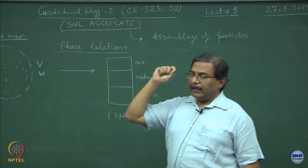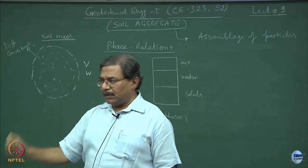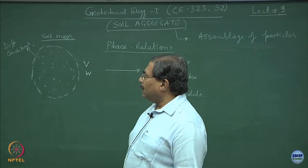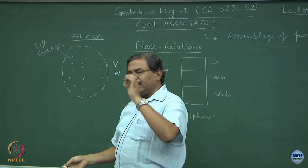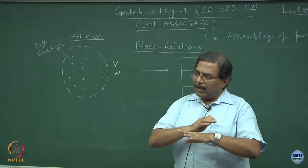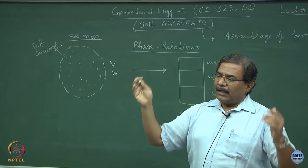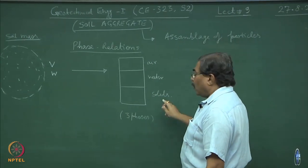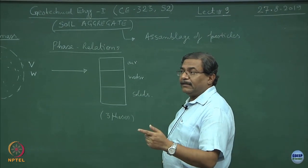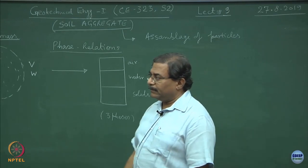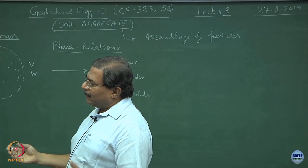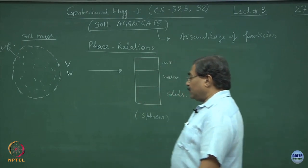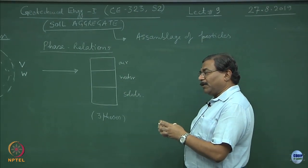Individual particles of the grain are incompressible. Now, if you do this type of mathematical modelling, this becomes discrete modelling — you are considering each and every particle in the continuum, which is a continuous system containing several millions of soil particles. However, an assemblage of the grains is going to be compressible. It is a very tricky material: sometimes we talk about incompressible grains, but now the matrix of the soil mass is going to be compressible.